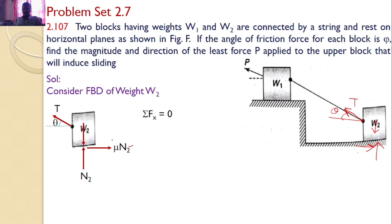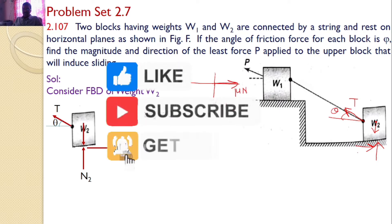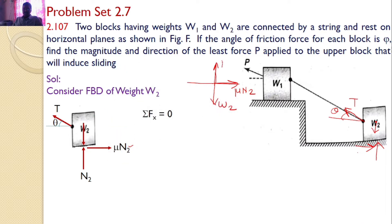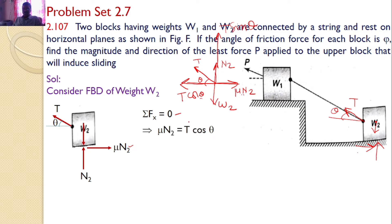Transfer all forces along the x-axis and y-axis. The self-weight W2 acts in the downward direction, mu times N2 acts horizontally, normal reaction N2 acts upward, and T acts at angle theta, resolved into horizontal component T cos(theta) and vertical component T sin(theta). By considering the equilibrium equation sigma Fx = 0, we get mu times N2 = T cos(theta), and hence N2 = T cos(theta) / mu.